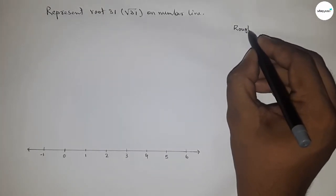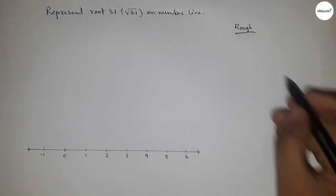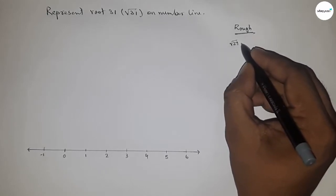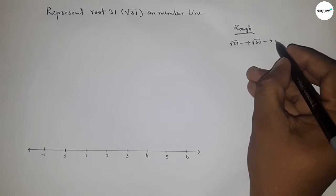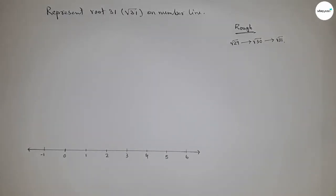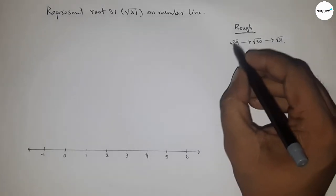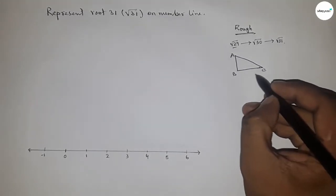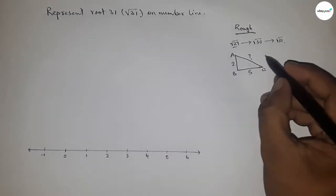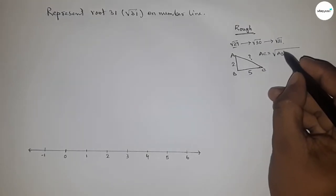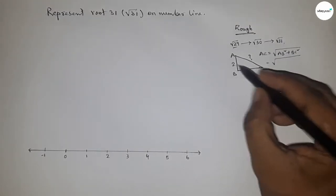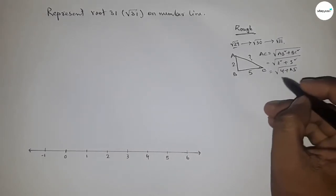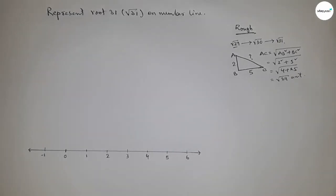Now let's roughly discuss the calculation. To represent root 31, we first need to represent root 29, then root 30, then root 31. For root 29: if there is a right-angle triangle ABC with base 5 and height 2, then by Pythagoras theorem, hypotenuse equals root over (5² + 2²) = root(25 + 4) = root 29 units.